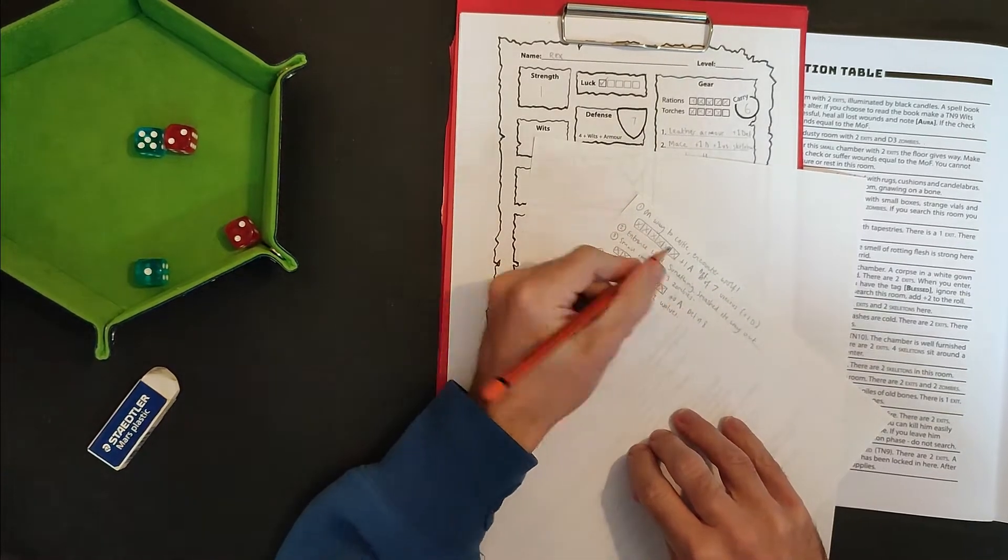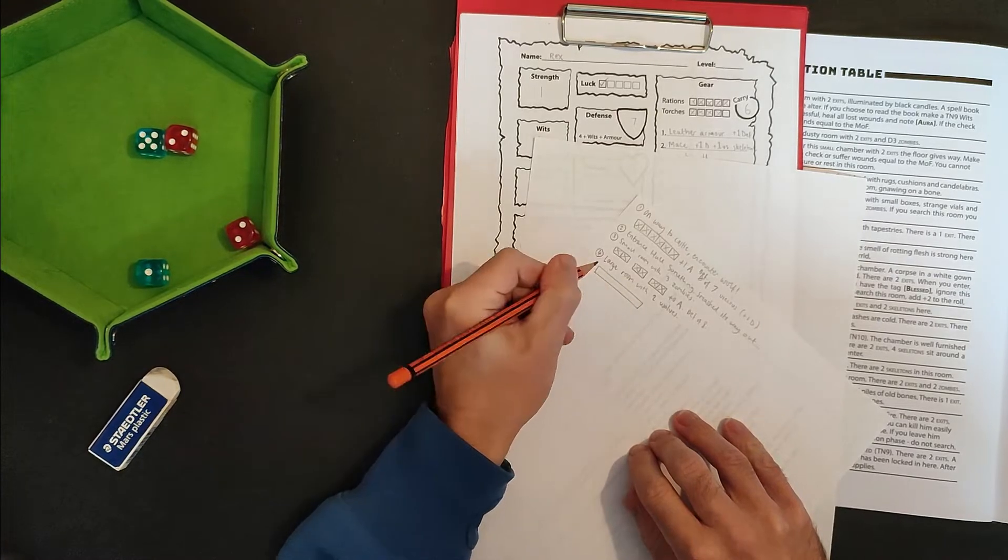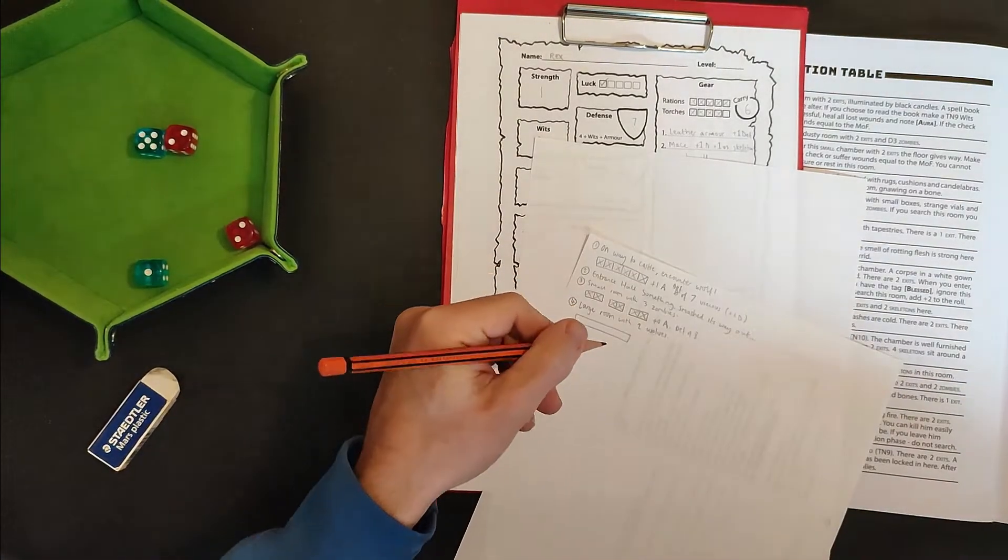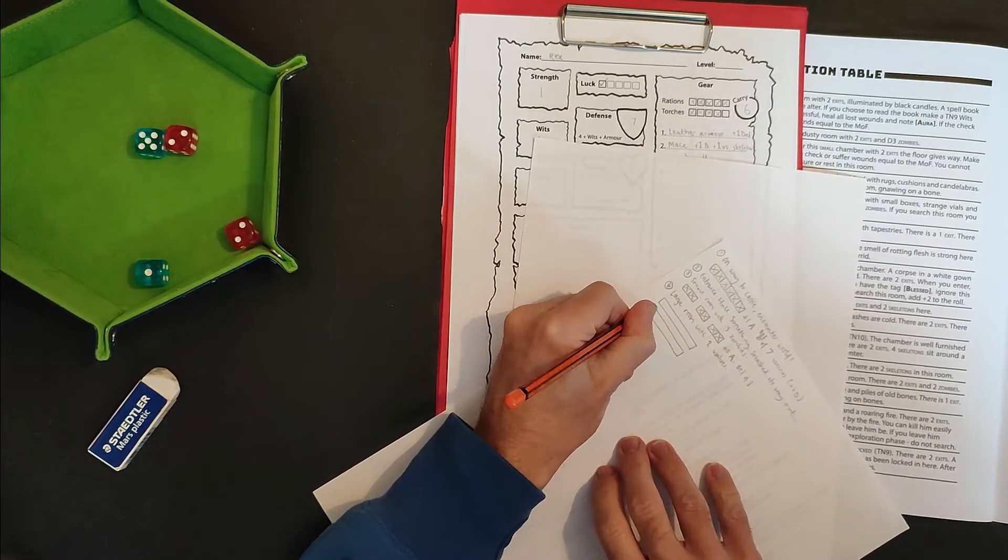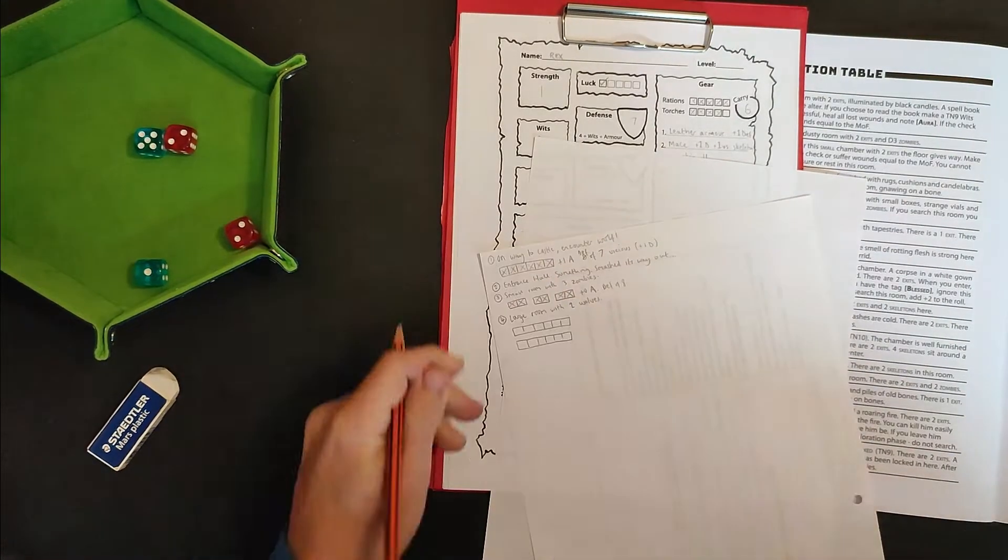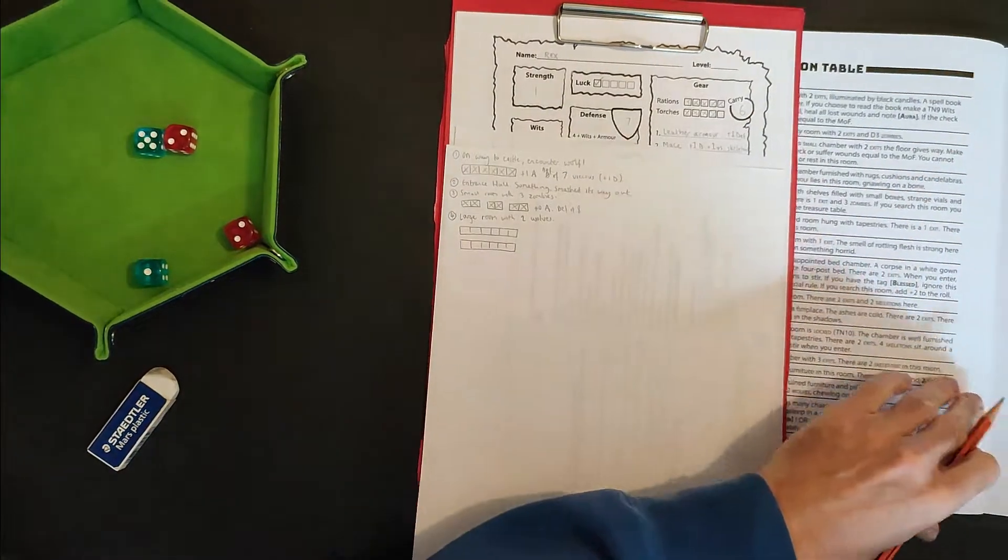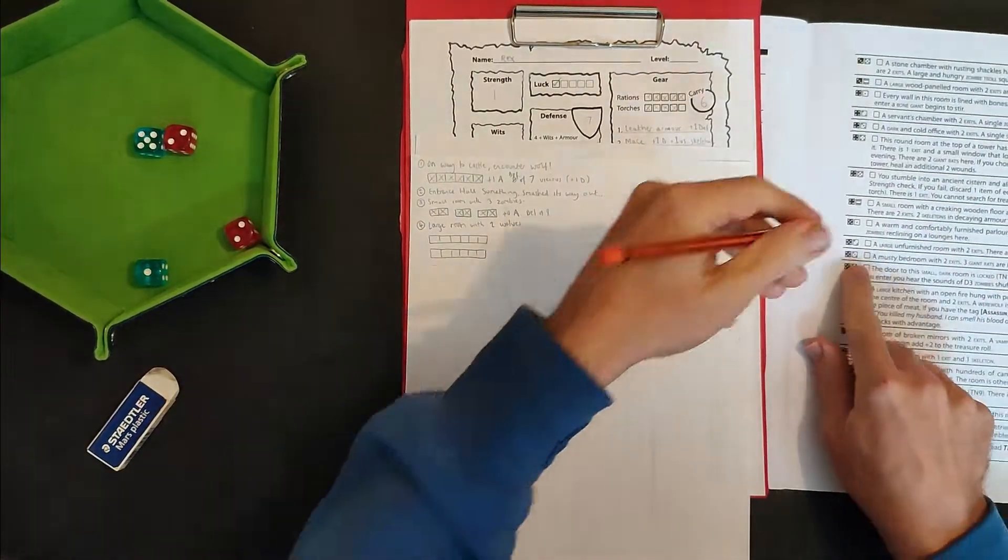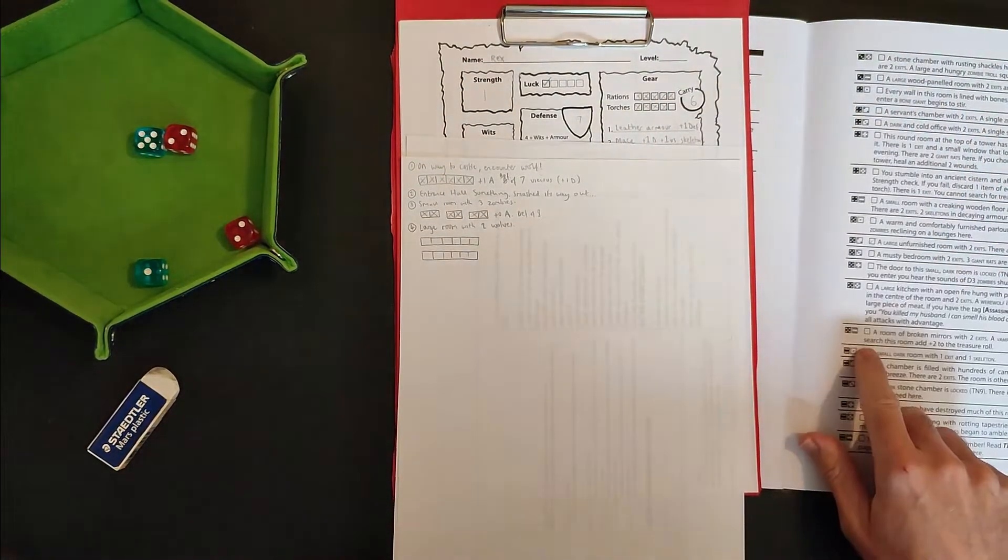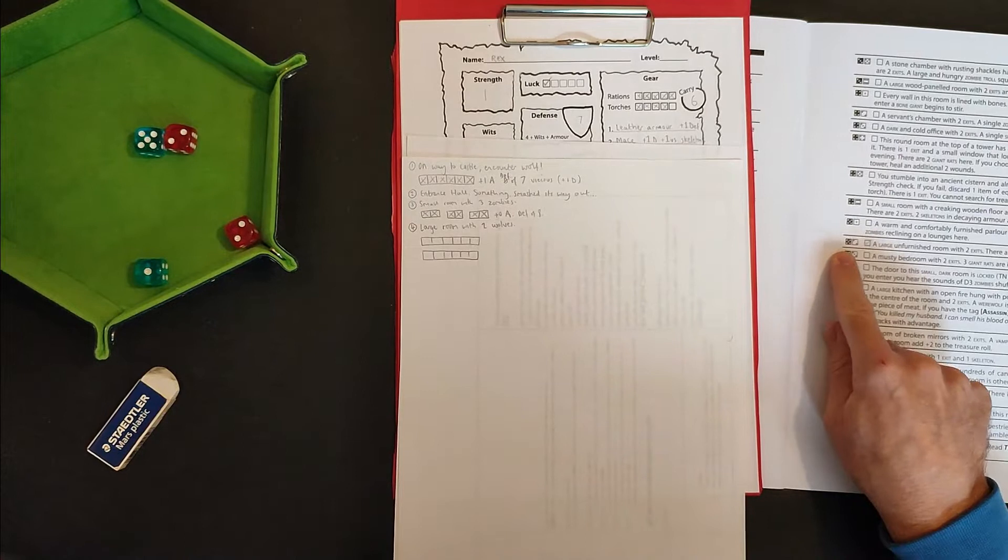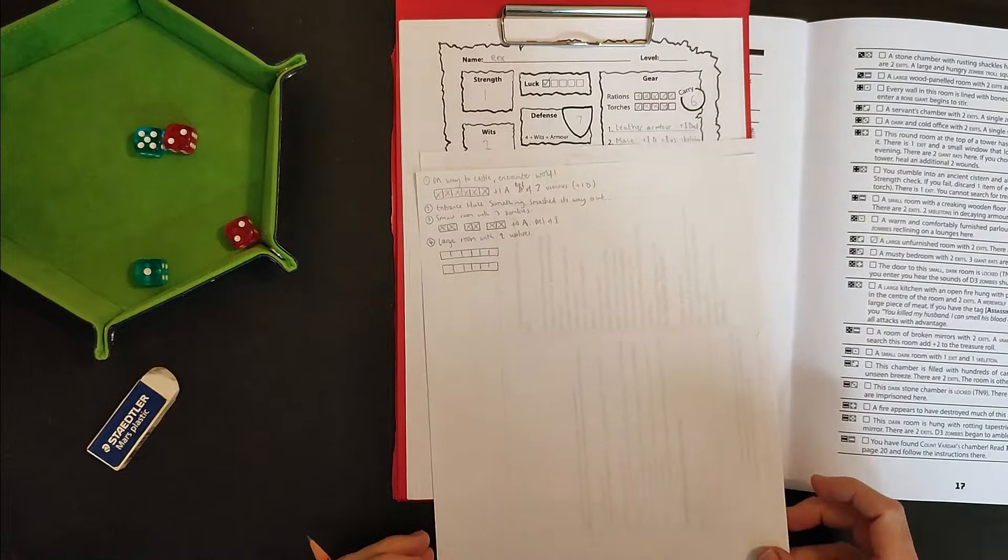And we've encountered wolves before so we know all the details about them already. I've got them noted up here. They have six points of damage each, so they can take six hits before they are defeated. And the other thing we need to do is tick off the room here because you only find each room once. So if I were to roll 52 again, I would go on to 53 and find that room instead.